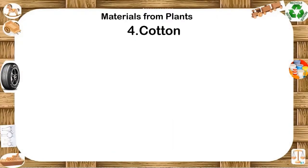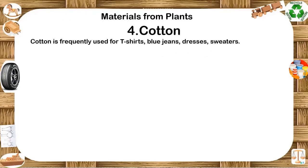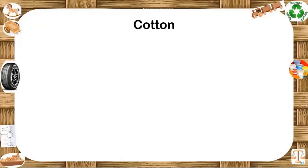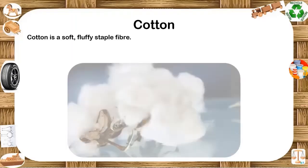Cotton. Textiles made of cotton are soft, durable and have more absorbency. Cotton is frequently used for t-shirts, blue jeans, dresses, sweaters and much more. Bed sheets and towels — since cotton is extremely soft and absorbent, it is an ideal fabric for bedroom liners and towels needed to soak up moisture. Cotton is a soft, fluffy, stable fiber that grows in a boll or protective capsule around the seeds of cotton plants.